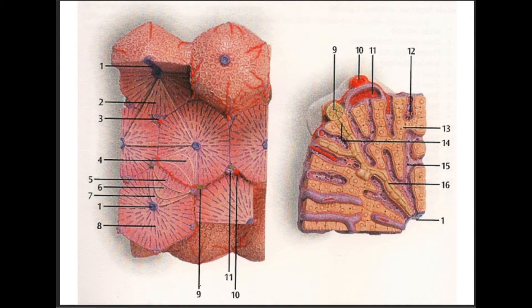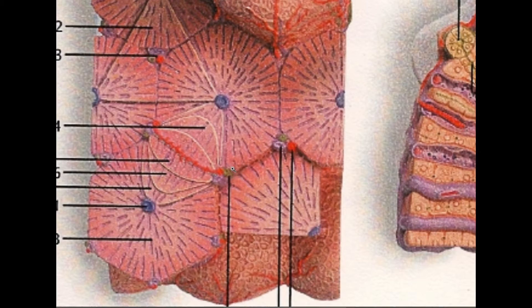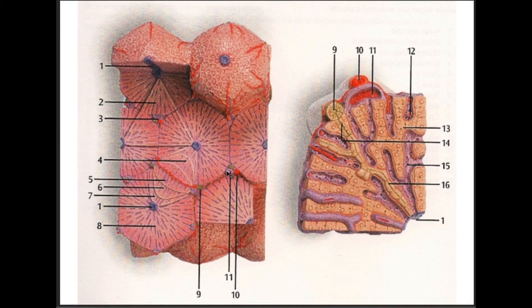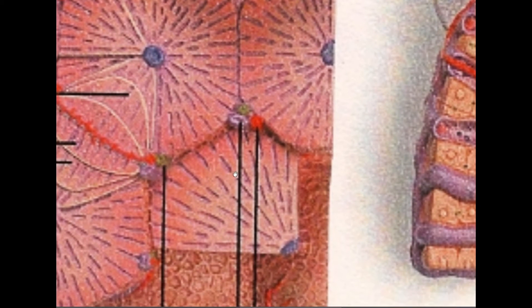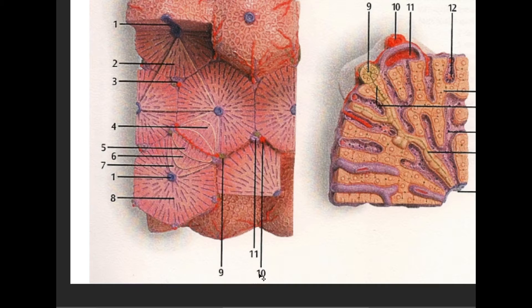Number nine is pointed to the interlobular bile duct. Zooming in, it appears as a green color — that's one of the interlobular bile ducts. Number ten, zooming in, is the interlobular artery shown in red. Right next to it is the interlobular vein, which is number eleven. So number ten is the interlobular artery and eleven is the interlobular vein.